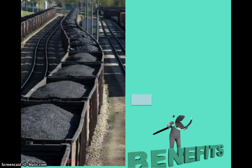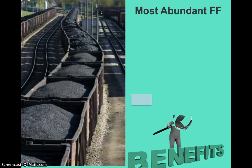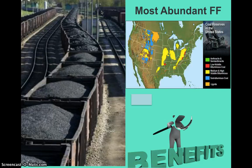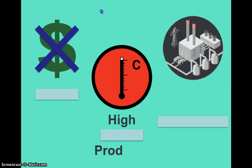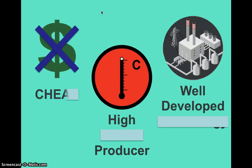There are benefits to using coal. The number one benefit is that coal is the most abundant of all the fossil fuels — we can find more coal than any other fossil fuel on Earth. Even better, the U.S. has most of it, so as a country we have the most of this abundant fossil fuel. It's also cheap, it's a high producer of heat, and the technology has been around since the Industrial Revolution, so it's well-developed.